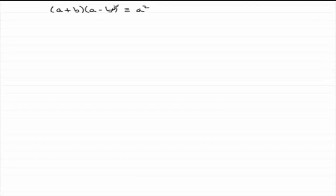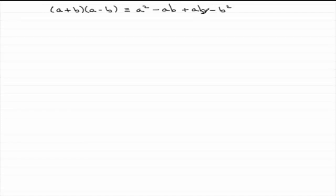a times a, which is a squared. Then a times minus b, which is minus ab. And then b times minus b, which is minus b squared. And minus ab plus ab comes to zero.